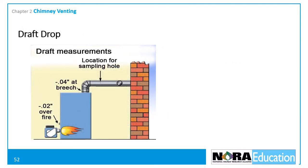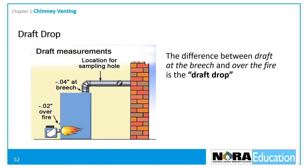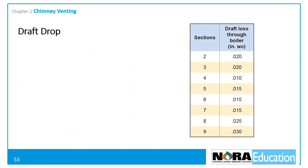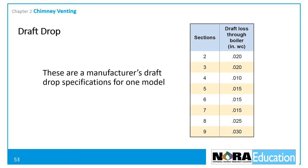Normally is emphasized here because the manufacturer's guidelines must be followed, and there are some oil-fired appliances that require positive over-fire draft. Manufacturers also specify what the draft drop through the appliance should be. Draft drop is the difference between the draft over the fire and the draft at the breach. For example, if there are negative 0.04 inches of draft at the breach and negative 0.02 inches over the fire, the draft drop is negative 0.02 inches of water column.